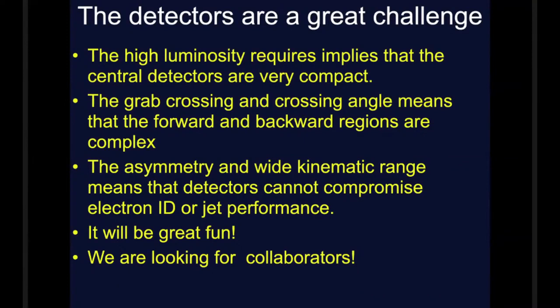So the detectors are really a great challenge. I'm sure Boris would love it. The central detectors are very compact. The crab crossing and the strong crossing angle means the forward regions are very complex. Another basic problem is it's not like the LHC where you're colliding things which are basically symmetric. It's a very asymmetric system and you're trying to measure this over a very wide kinematic range. Sometimes we even want to look at the electrons coming backwards for example. We can't compromise electron ID or jet performance or particle ID anywhere in the detector. We think it'll be great fun and we're currently looking for collaborators.